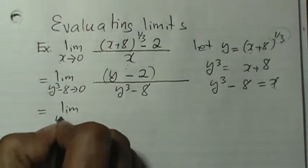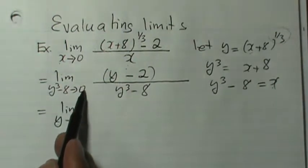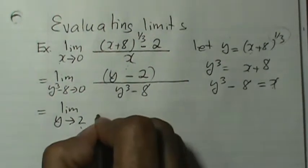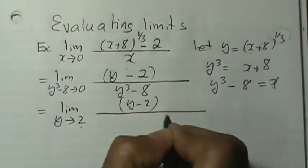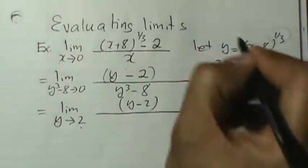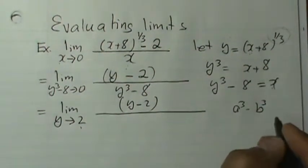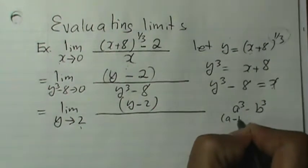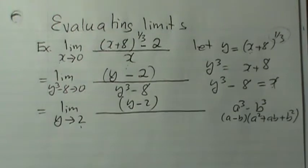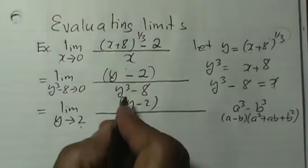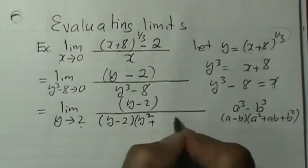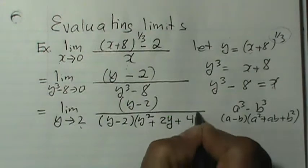The limit becomes as y approaches 2, because if I bring negative 8 to the other side it becomes positive 8, and the cube root of positive 8 is 2. So y approaches 2, and in the numerator we have y minus 2. We factor the bottom using difference of cubes: a cubed minus b cubed equals a minus b times a squared plus ab plus b squared. Here a is y and b is 2, giving us y minus 2 times y squared plus 2y plus 4.